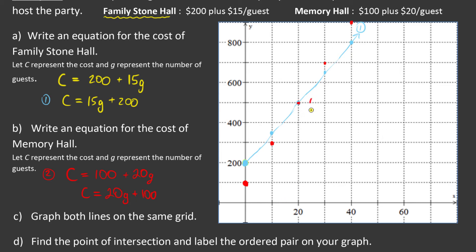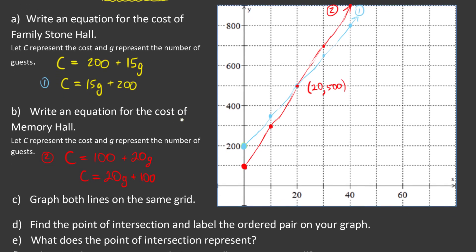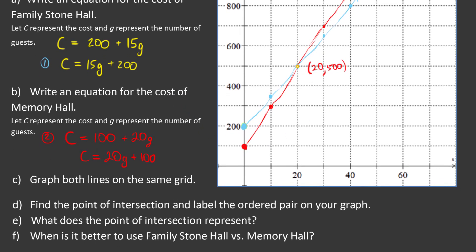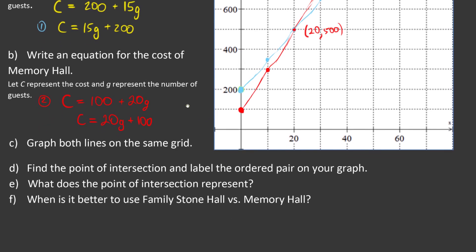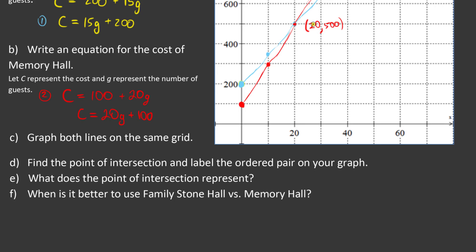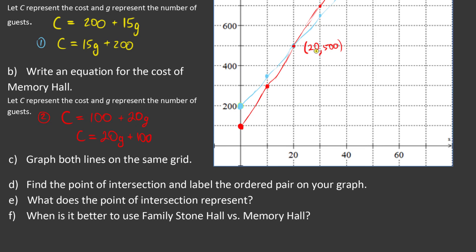A little bit easy to see there at 20, 500. And so if I just finish my work here, connect my dots. And graphing by hand is not a fun thing to do. So we're going to use technology whenever we get the chance. And furthermore, if you watch my next videos, we're going to solve this stuff without even having to graph. We'll do it algebraically. So it says here to find the point of intersection and label the ordered pair on your graph. So I've done that right here, 20, 500. What does this point of intersection represent? Well, what it represents is that at 20 guests, both halls will cost $500.